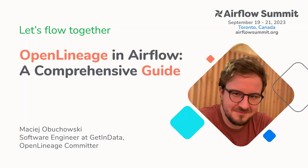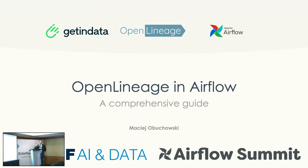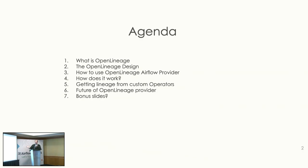I'm a software engineer working on data. I've been an Airflow Committer for a couple of months and have been working on OpenLineage for over two years. It was heartwarming to see the community grow and see OpenLineage mentioned from the stage and in product announcements. But no one has actually explained what OpenLineage is, so I'm here to fill the gap — covering what it is, how it's designed, how to use it in Airflow, how it works underneath, and how to get lineage from custom operators.